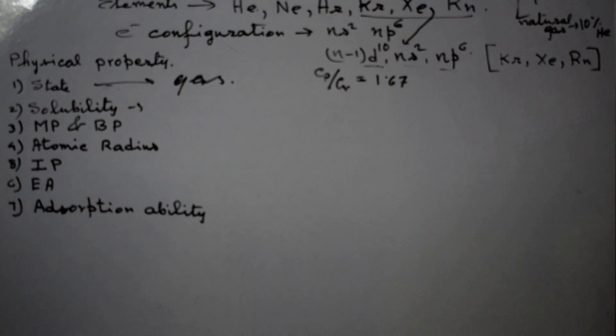We know that xenon can form some compounds, but mainly these gases have a stable electronic configuration. That's why they are called inert. Now we are going to learn the total physical property and chemical property of those gases.